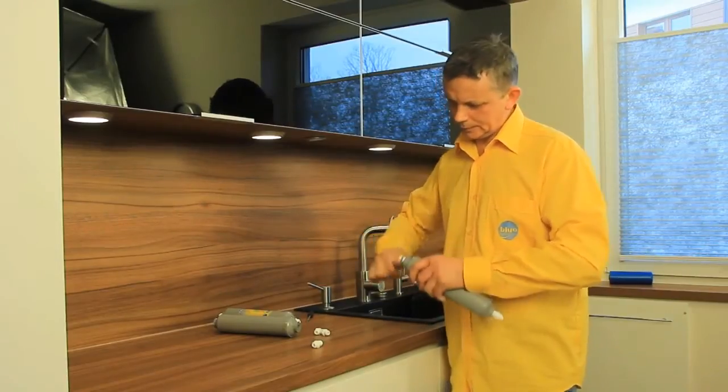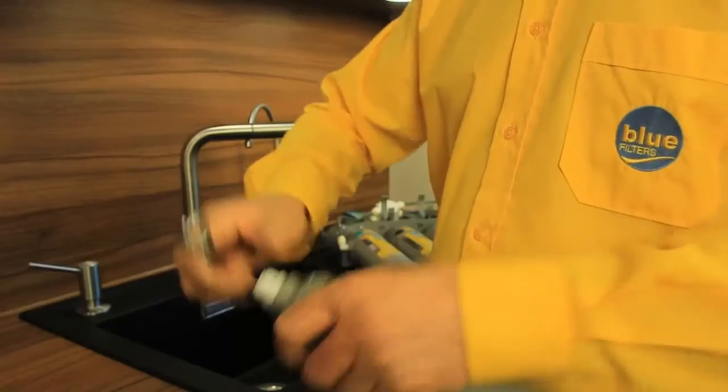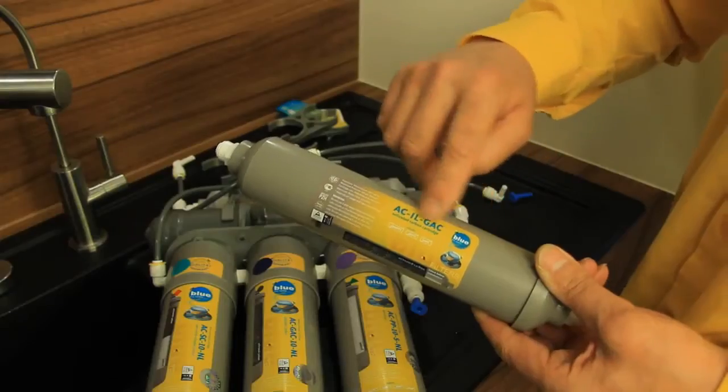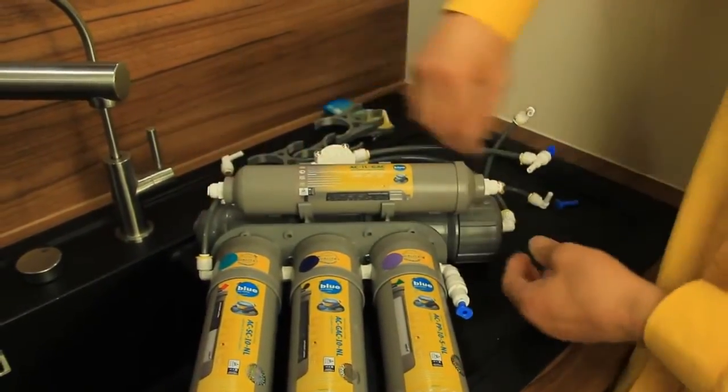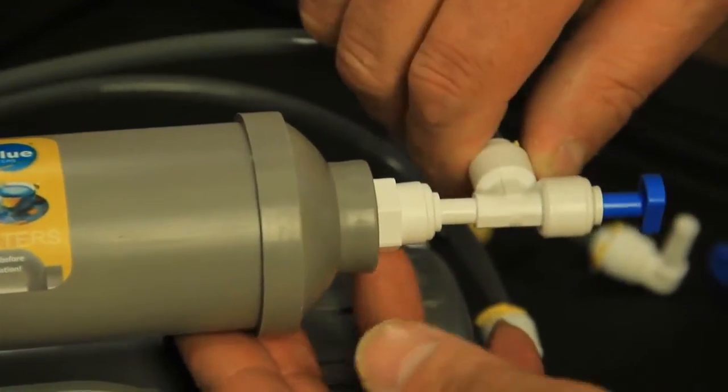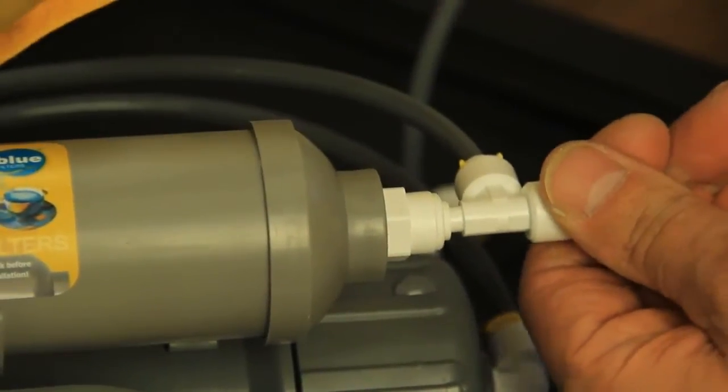For easier installation, lubricate the membrane seal with food grade Vaseline. Next, connect all the tubing in exactly the same order in which it was disconnected.